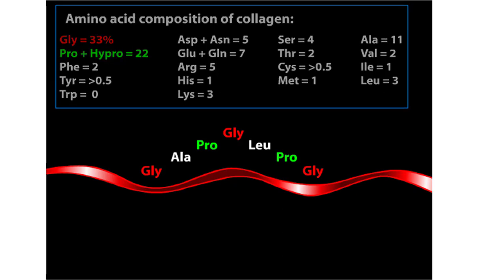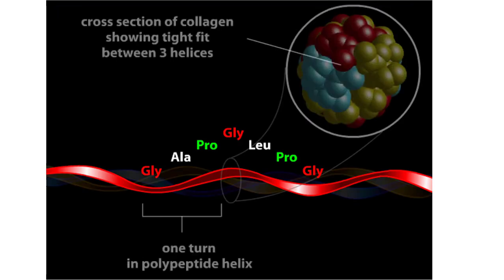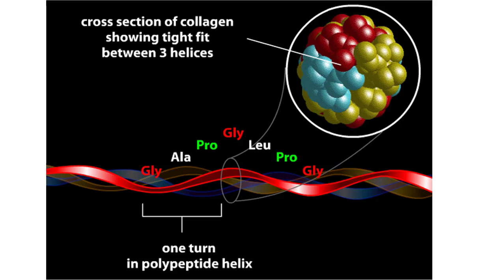Each helix contains three amino acids per turn, with glycine located at every third position. The three polypeptides in a collagen molecule associate with their glycines all facing the collagen center. Glycine is the only amino acid small enough to allow the polypeptides to pack, by hydrogen bonding, into a tight cable.